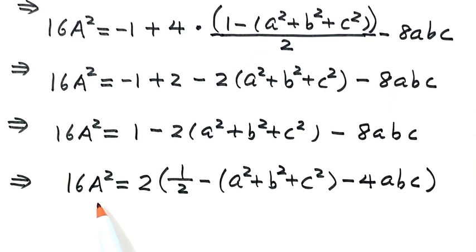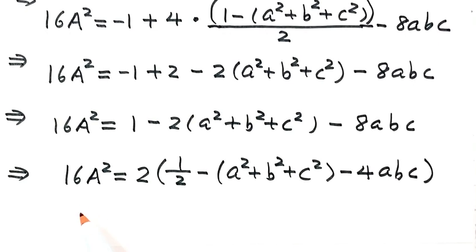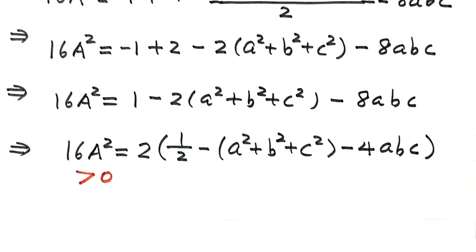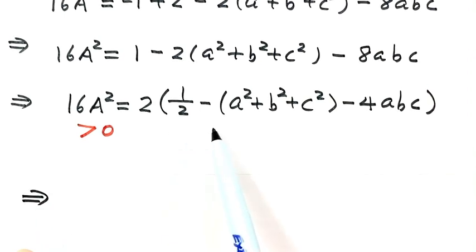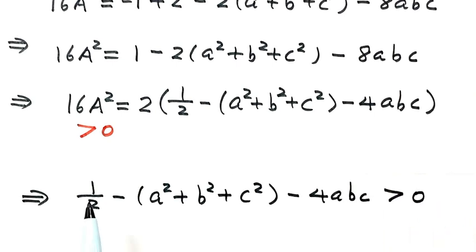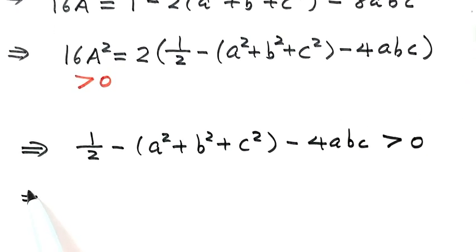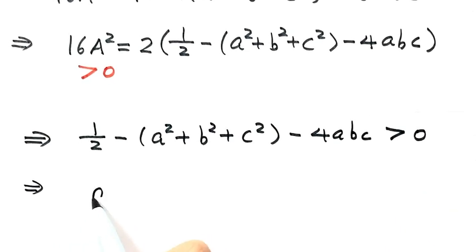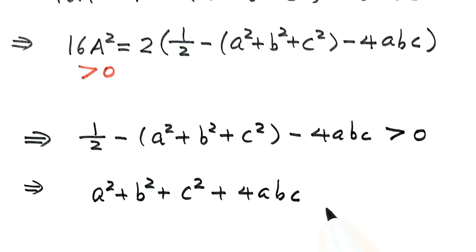Because A represents the area of a triangle, it is bigger than zero, so the left-hand side is bigger than zero. Therefore the right-hand side must also be bigger than zero, meaning 1 half minus A squared minus B squared minus C squared minus 4ABC is bigger than zero. Rearranging, we get: A squared plus B squared plus C squared plus 4ABC is less than 1 half. This proves the inequality.